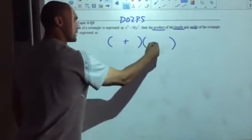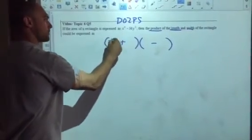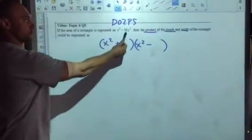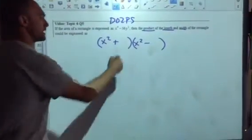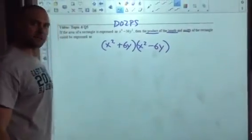So DO2PS: one is plus and one is minus. The square root of x to the 4th is x squared, and the square root of 36y squared would be 6y, so plus 6y and minus 6y.